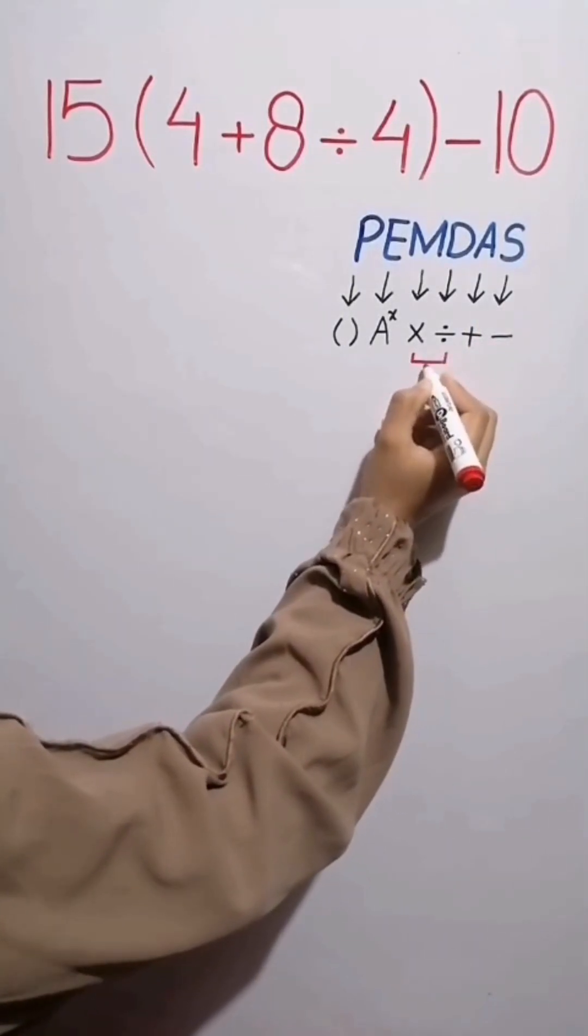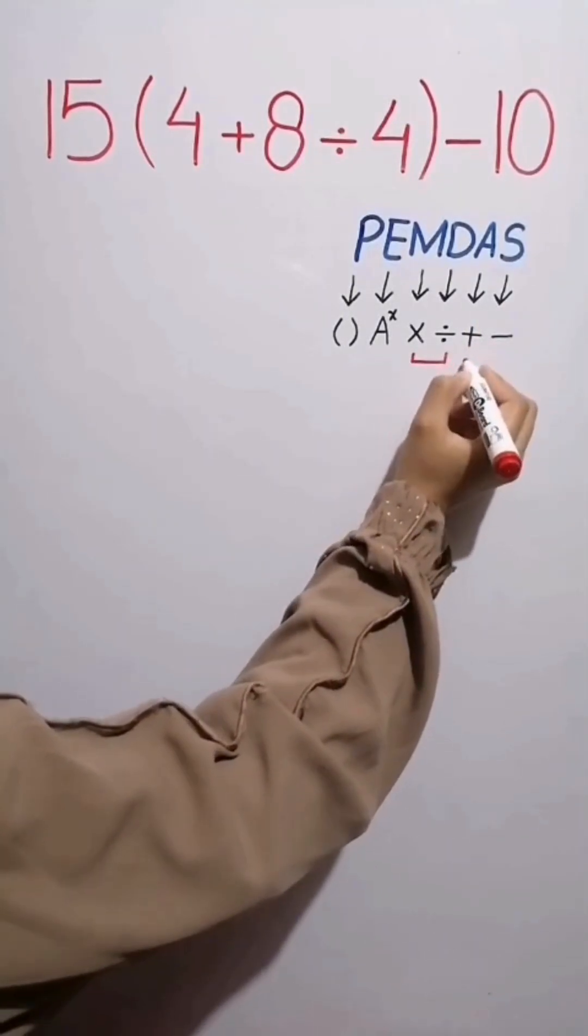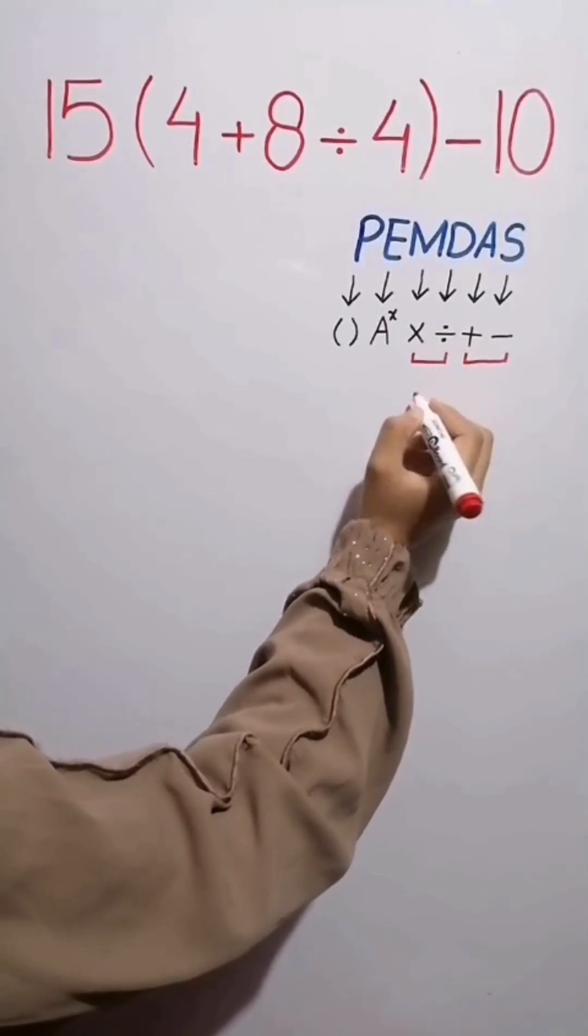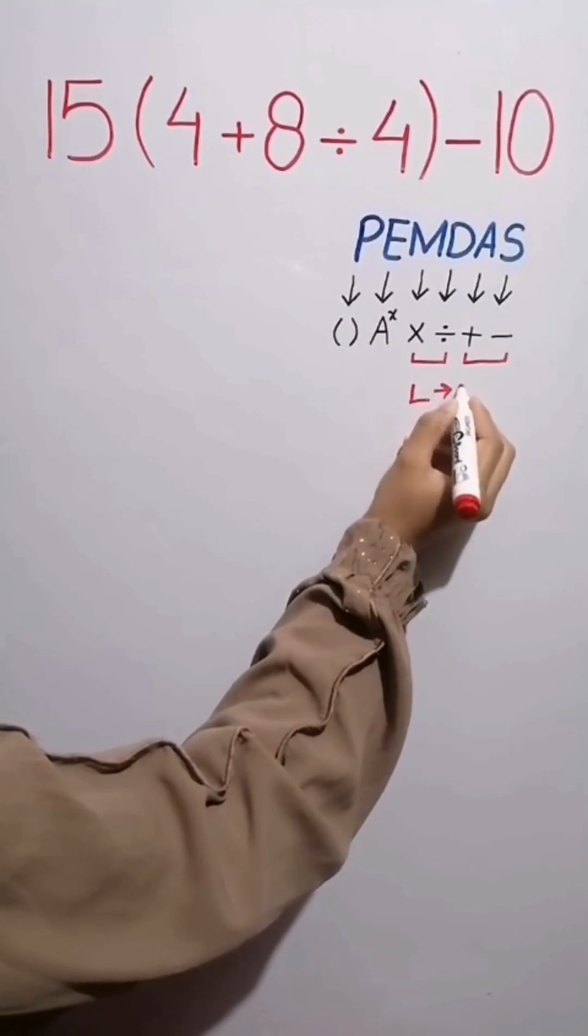Multiplication and division have the same level of priority. Also, addition and subtraction have the same level of priority. When we have both in an expression, we start from the left and simplify the question.